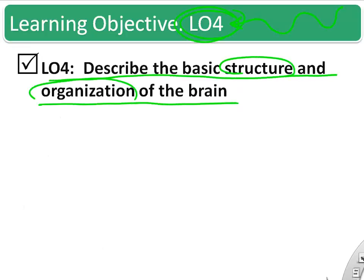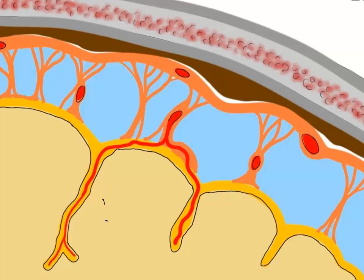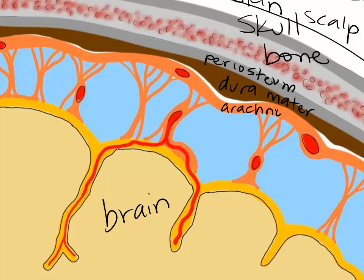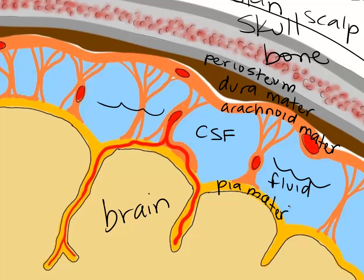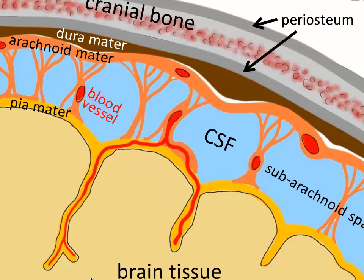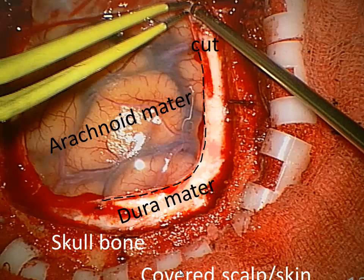Now we'll describe the basic structure and organization of the brain. The brain has three protective layers under the skull: the dura mater, the arachnoid mater, and the pia mater. Cerebrospinal fluid is sandwiched between the arachnoid mater and pia mater, helping cushion the brain. These connective tissue layers also have lots of blood vessels. In brain surgery, you can see the dura mater and arachnoid mater, and some CSF cushioning inside.